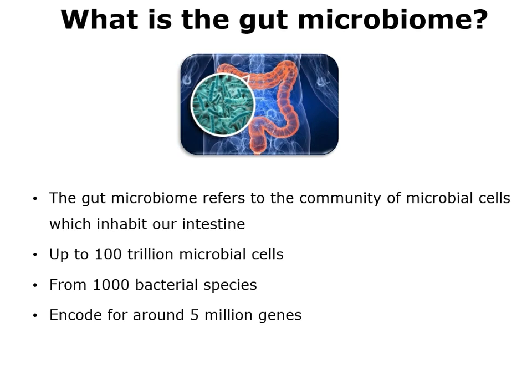It was once thought that microbial cells could outnumber our own cells by about 10 to 1. However, more recent studies suggest that microbial cells and human cells coexist at around a 1.3 to 1 ratio — so 1.3 microbial cells to every human cell. They do outnumber us, but less so than we originally thought. Whatever the numbers, when we think about it this way, it seems less surprising that these microbes could have a big effect on us as their host. If they're encoding for up to around 5 million genes, it's not surprising that they affect our health in some way.